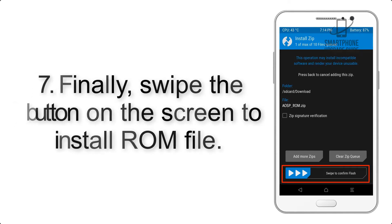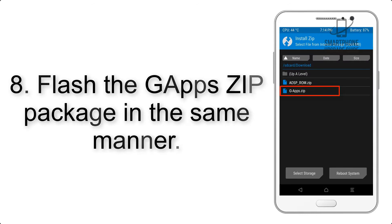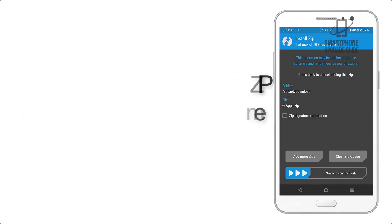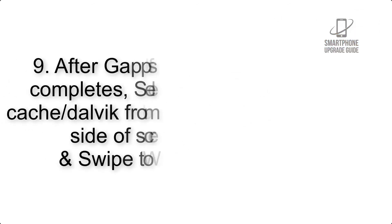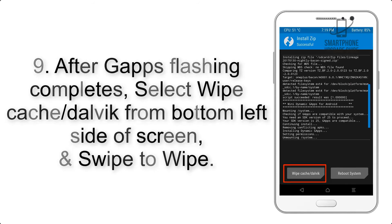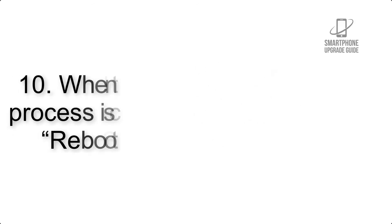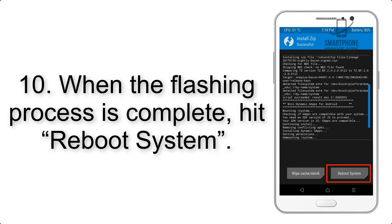Step 7: Swipe the button on the screen to install the ROM file. Step 8: Flash the GApps zip package in the same manner. Step 9: After GApps flashing completes, select Wipe Cache and Dalvik from the bottom left side of the screen and swipe to wipe.